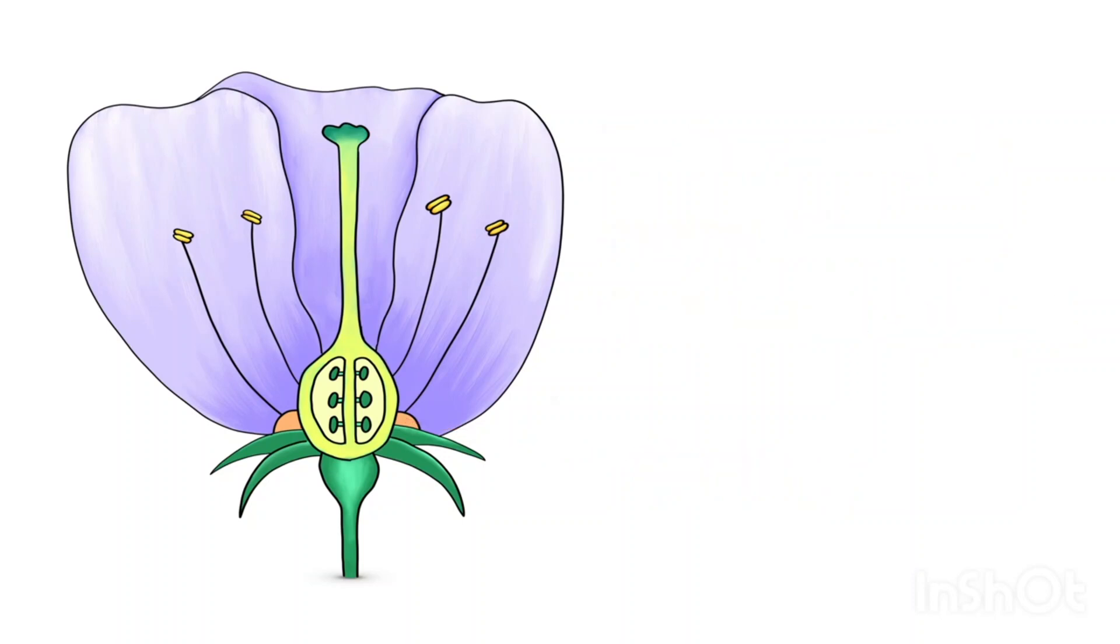Most flowers have both male and female parts and this part here is the stamen, the male part of the flower. You can see four stamens on this diagram.